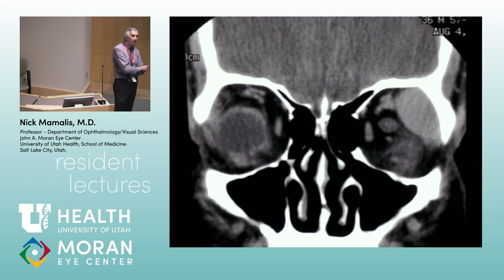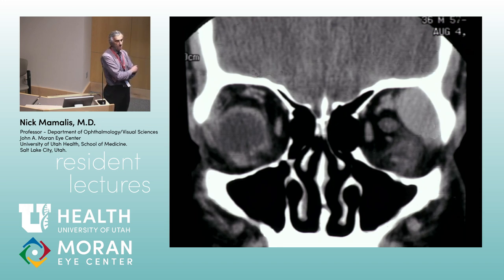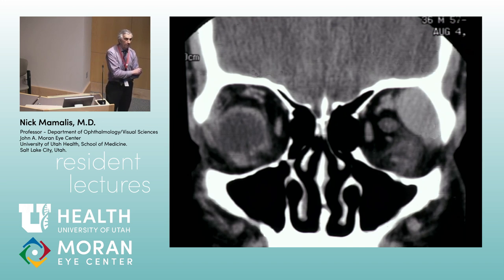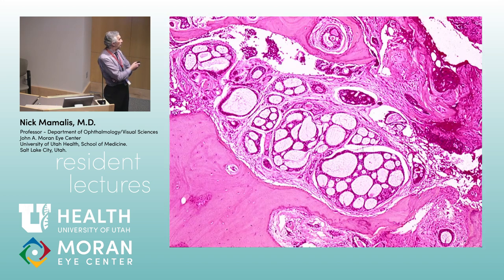What would your concern be here? The differential would include something neoplastic versus inflammatory versus possibly infectious. If this were indeed a tumor in the lacrimal gland area, what tumor would you be concerned about? We talked about pleomorphic adenomas — another type is adenoid cystic carcinoma. Adenoid cystic is another type of carcinoma that can occur from the lacrimal gland. It's less common than pleomorphic adenoma but it's more aggressive — these can be quite nasty tumors.